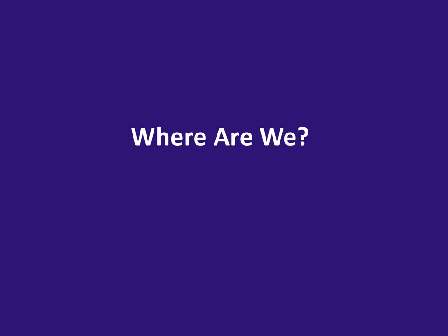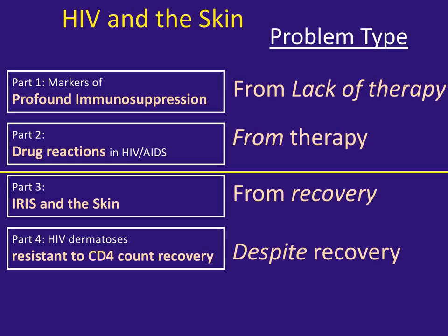Just briefly, where are we in this series? We talked about the marks of profound immunosuppression — problems from lack of therapy. Today we did the cutaneous adverse drug reactions — problems from the therapy itself. Next time we'll move to IRIS in the skin — problems from recovery. And then HIV dermatoses relatively resistant to CD4 count recovery — problems despite recovery. That's the overall organization scheme: problems from lack of therapy, problems from therapy, problems from recovery, and problems despite recovery. Thank you all very much.